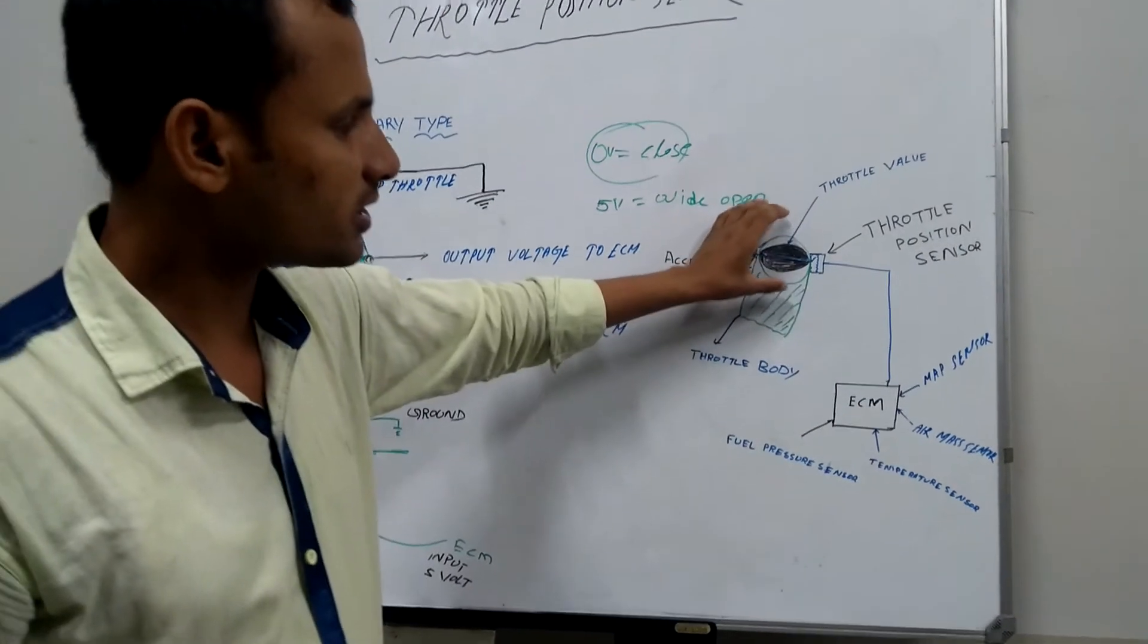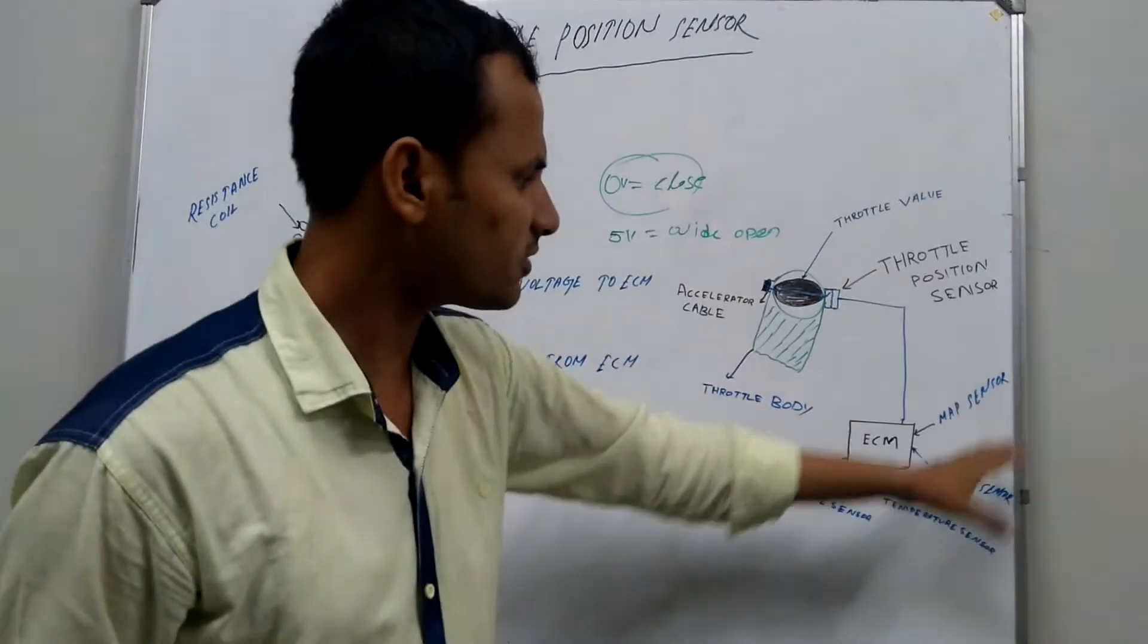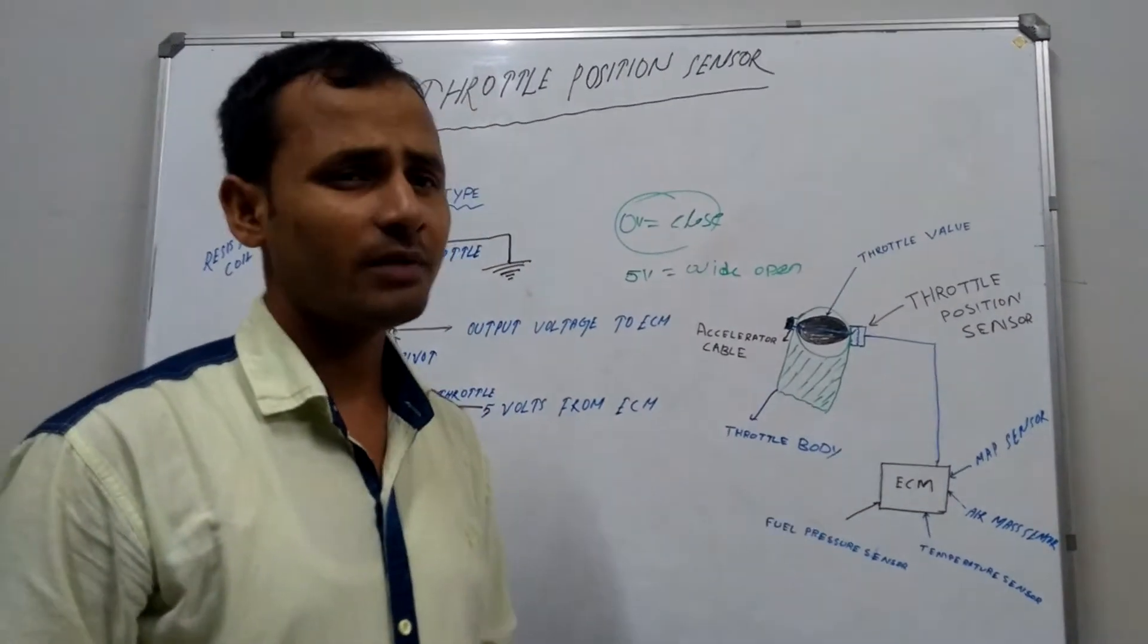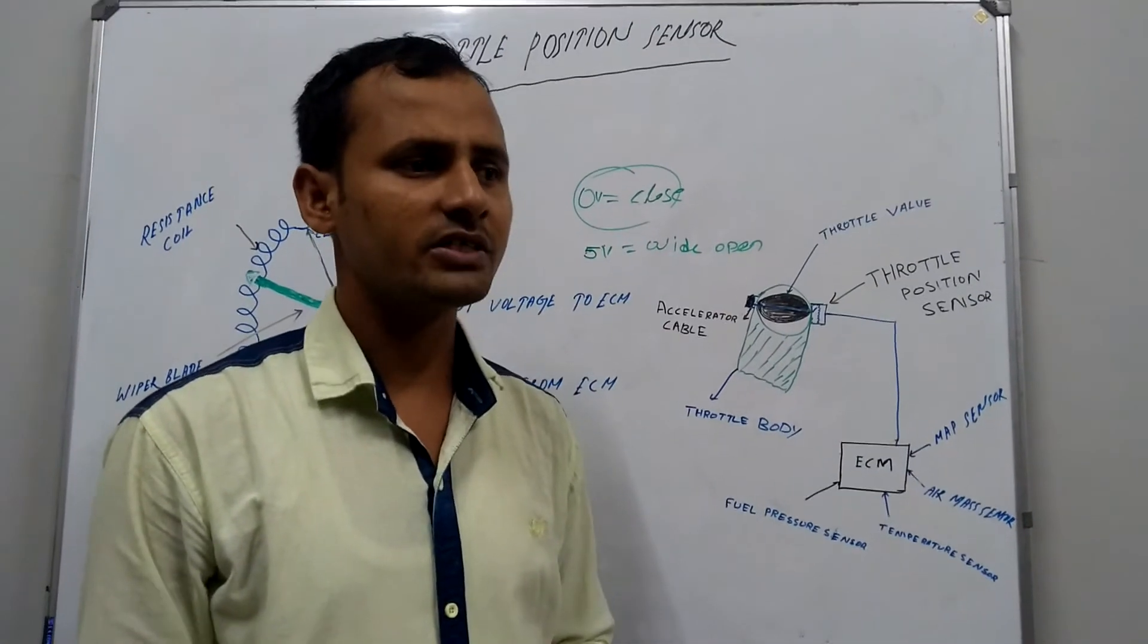The throttle position sensor is connected to the ECM or ECU. Other sensors are also connected to the ECM or ECU. Throttle position is also helpful for the automatic transmission system for gear shifting.